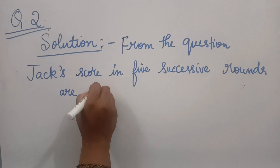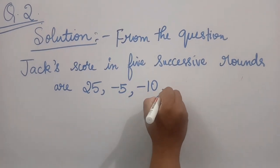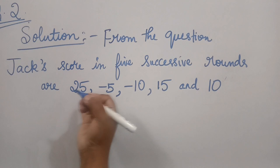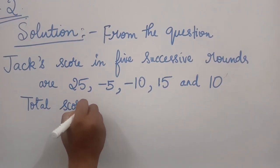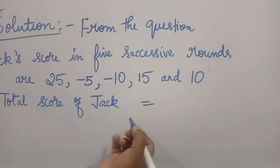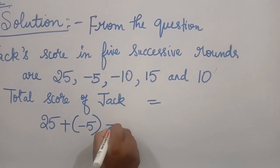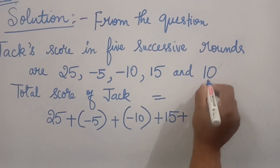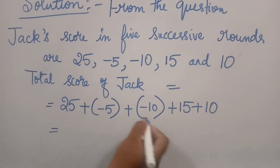The scores are: first round 25, second round minus 5, then minus 10, then 15, and the last round was 10. You have to add them all. So the total score of Jack at the end: 25 plus a bracket minus 5, plus a bracket minus 10, plus 15, plus 10. Add the positive numbers: 25 plus 15 plus 10 gives 50. Add the negative numbers: minus 5 plus minus 10 gives minus 15. So 50 minus 15.